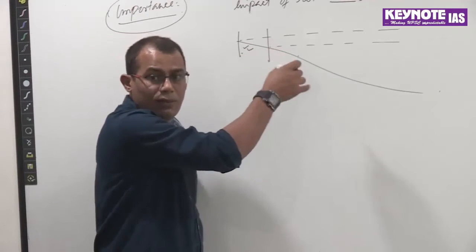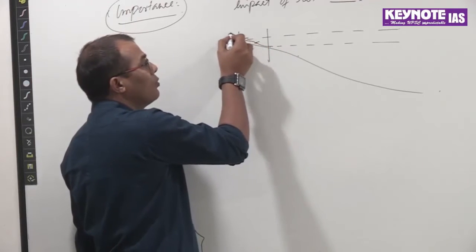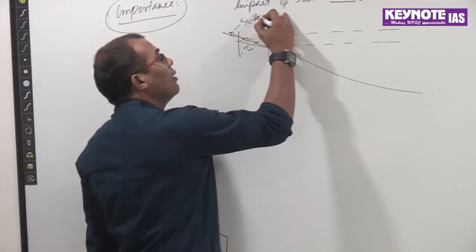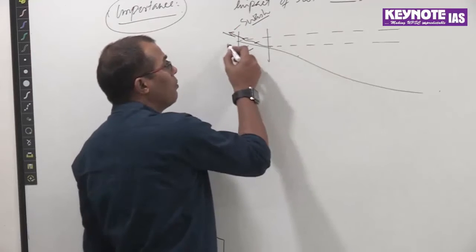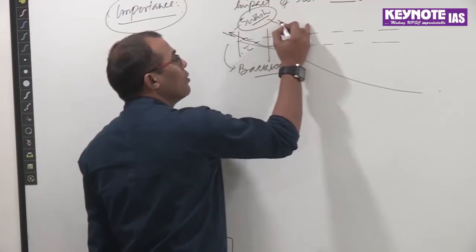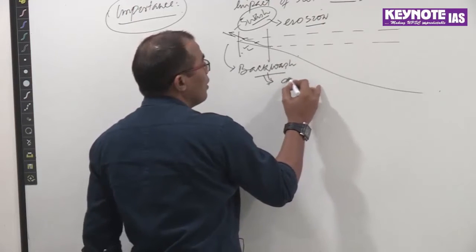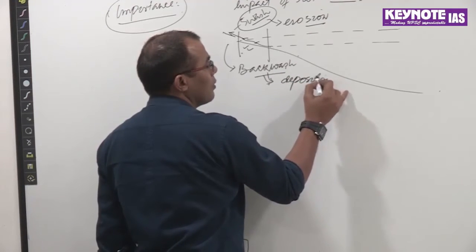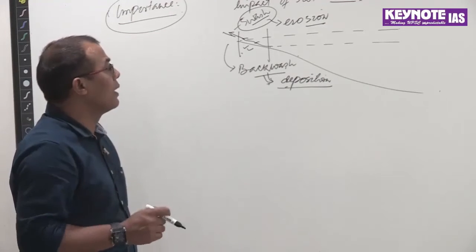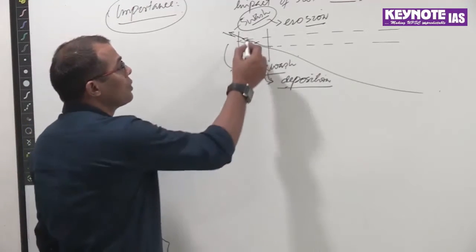Depositional landforms may be found away from the erosional zone. When backwash takes place — waves move towards the land (swash), and after a point they retreat (backwash). Swash is basically responsible for erosion, and backwash is responsible for deposition. Through swash and backwash, the most vulnerable area affected for landforms is the shore zone.